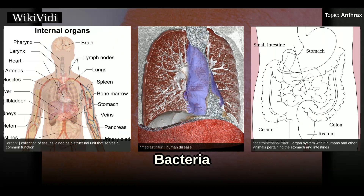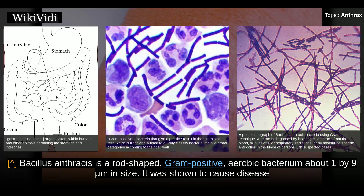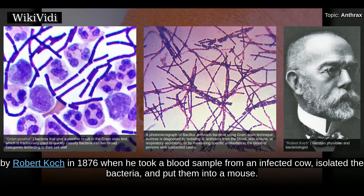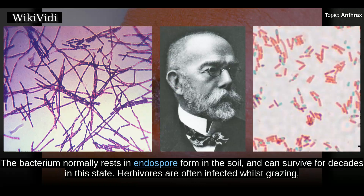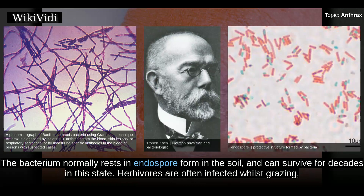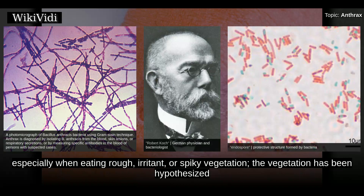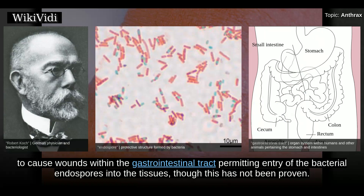Bacillus anthracis is a rod-shaped, gram-positive, aerobic bacterium about 1 by 9 micrometers in size. It was shown to cause disease by Robert Koch in 1876, when he took a blood sample from an infected cow, isolated the bacteria, and put them into a mouse. The bacterium normally rests in endospore form in the soil and can survive for decades in this state. Herbivores are often infected whilst grazing, especially when eating rough, irritant, or spiky vegetation. The vegetation has been hypothesized to cause wounds within the gastrointestinal tract permitting entry of the bacterial endospores into the tissues, though this has not been proven.